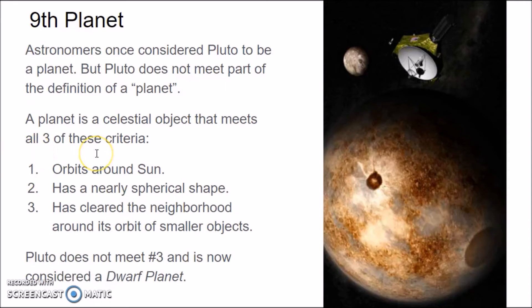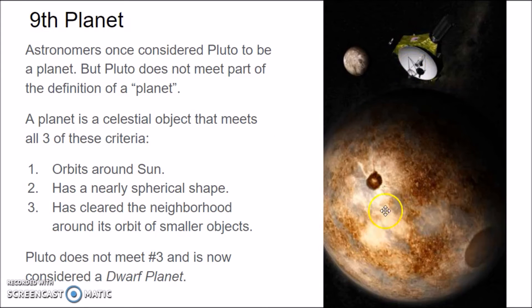Let's talk about poor Pluto. It used to be the ninth planet, but Pluto does not meet part of the definition of what a planet is now. A planet must meet three criteria: it orbits around the Sun — Pluto does that; it has a nearly spherical shape — Pluto has that too, confirmed by a robotic spacecraft; but number three, it must have cleared the neighborhood around it of smaller objects. Pluto has not done that — there are still things in Pluto's orbit it hasn't cleared out. So now we consider it a dwarf planet.